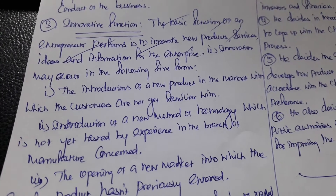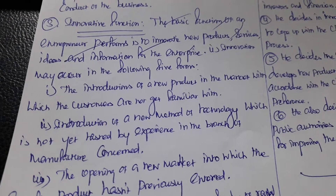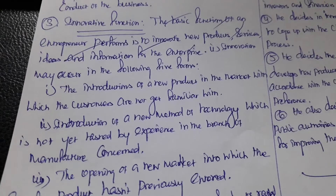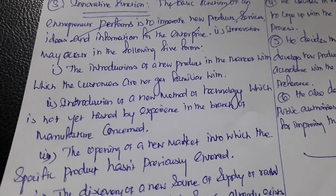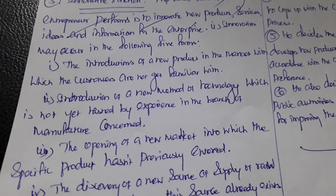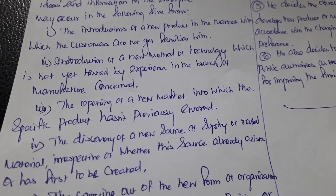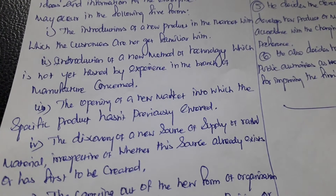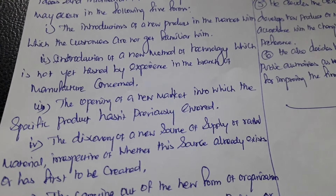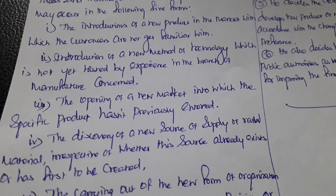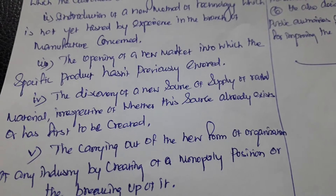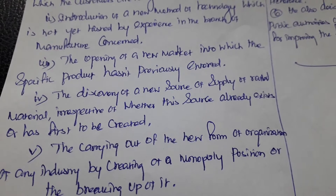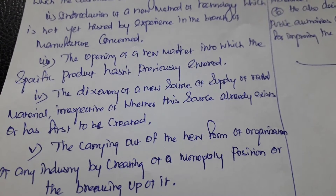The second innovative function is the introduction of a new method of technology which is not yet tested by experience in the branch of manufacturing. The third is the opening of a new market into which a specific product has not previously entered. The fourth is the discovery of a new source of supply of raw material, irrespective of whether the source already exists or is to be created for the first time.